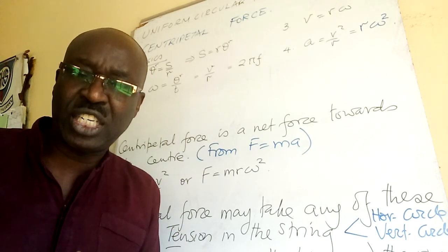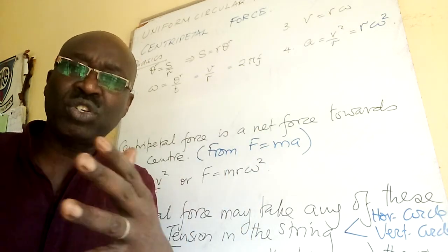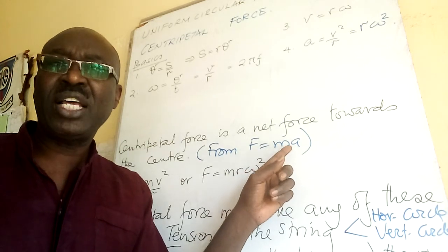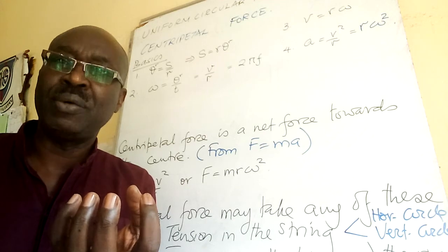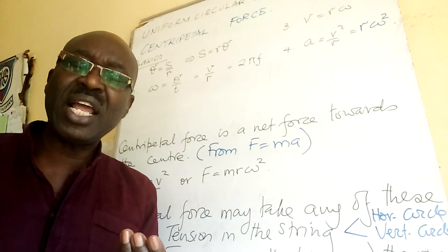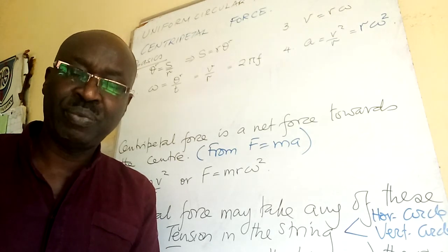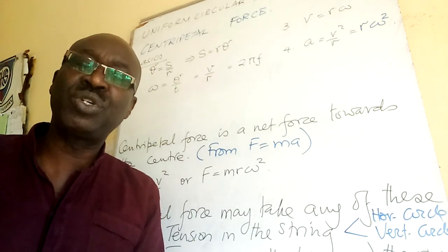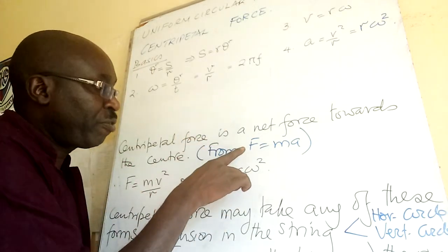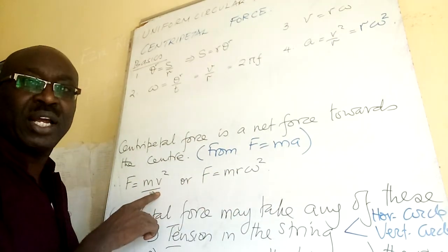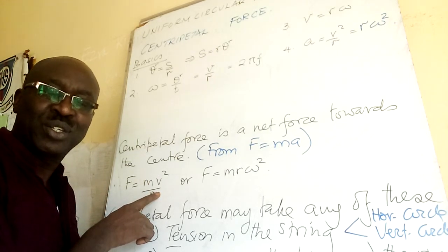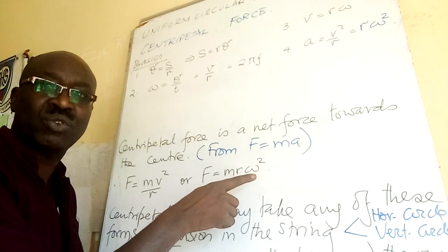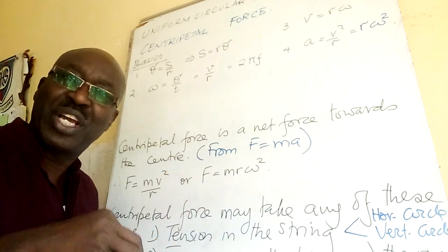In linear motion, 'net' means there are other forces in action, but what remains after considering those forces is what causes motion. That is why we have F = ma — m is the body's mass, and a is the rate of change of velocity. From F = ma, we substitute centripetal acceleration: a = v²/r, giving F = mv²/r. We can also replace a with rω², giving F = mrω².